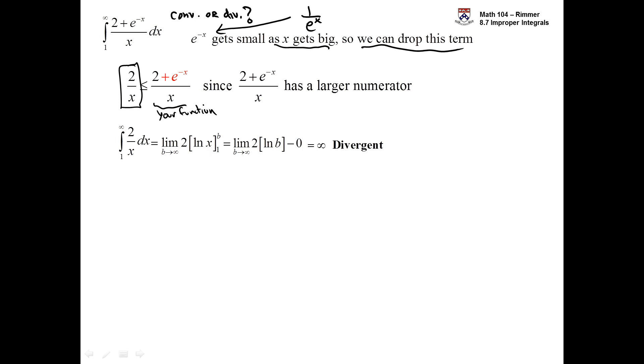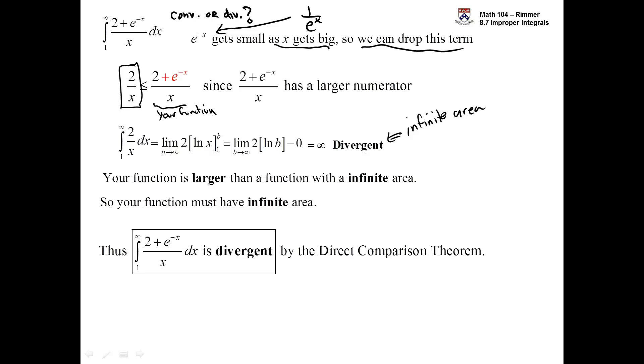Okay. So, your function is larger than a divergent, a function that has a divergent integral. Divergent is going to mean to you infinite area. So, your function is bigger than something that has infinite area. Your function then must also have infinite area. Does that make sense? And so, then by the comparison, the direct comparison theorem, we have that is divergent.